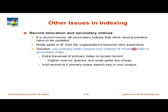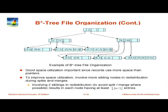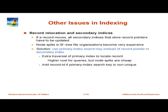When a leaf of the B+ tree file organization splits, no update to the secondary index is required because there are no physical pointers — only the primary search key is stored. The overhead is that when searching on the secondary index, you traverse down to the secondary index leaf, get a primary search key, then traverse down the primary index to find the actual record. So there are two traversals, but splits are now cheap.